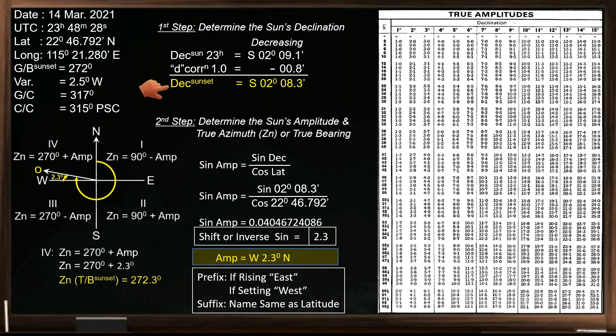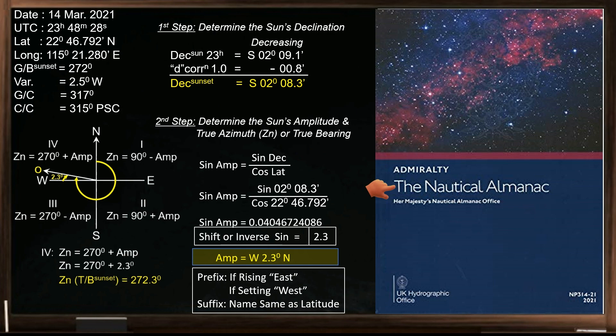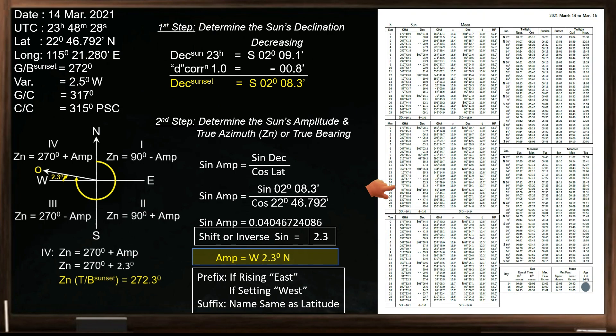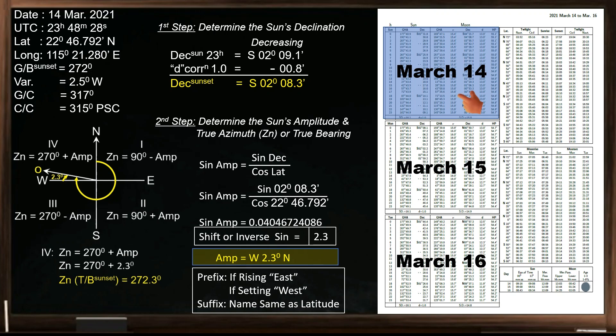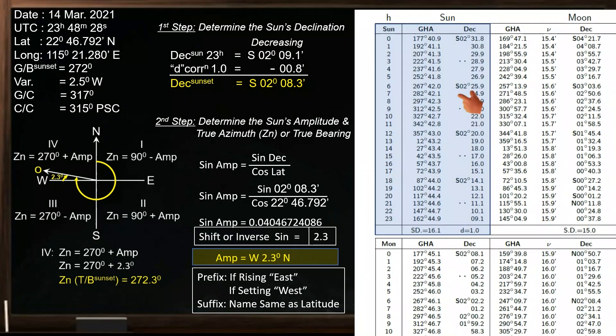To determine the declination, go to your nautical almanac, open the daily page, and find March 14th; the edition I used is 2021. In this daily page, it covers March 14th, 15, and 16. This is March 14th, let's zoom in on this portion.